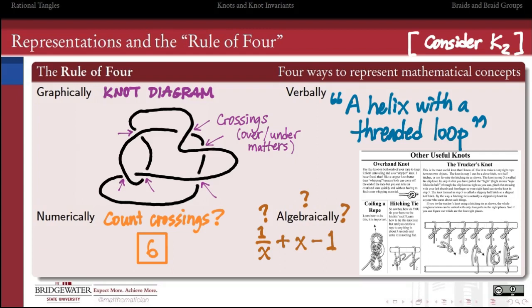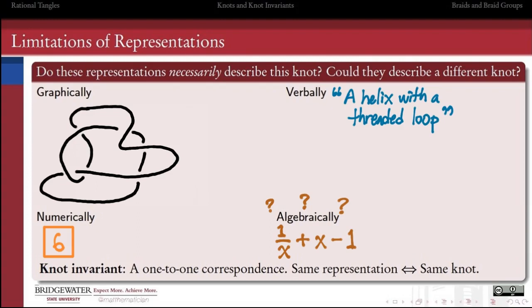The next question is how good are these representations? Are the representations enough for us to be able to recreate the knot from those descriptions? If I were to hand somebody this diagram for my knot, would they be able to reconstruct the very same knot for me? If I were to give somebody this verbal description, a helix with a threaded loop, could they reconstruct the same knot for me or might they construct something else? I think there, the answer is that we could construct something else that also fits the same verbal description. This also looks like a helix with a threaded loop in it. But I think it's not the same knot as the one we have over here on the left.